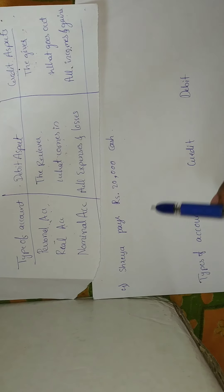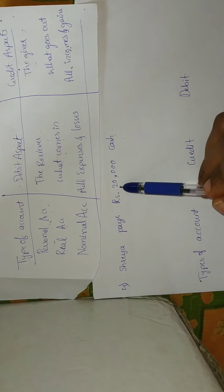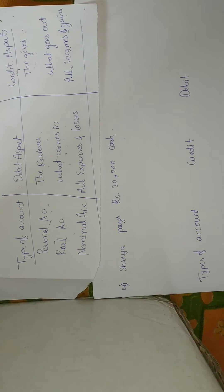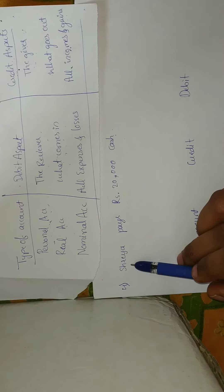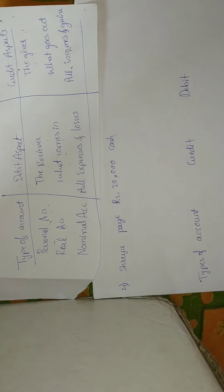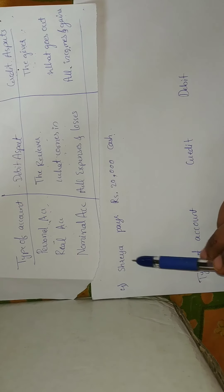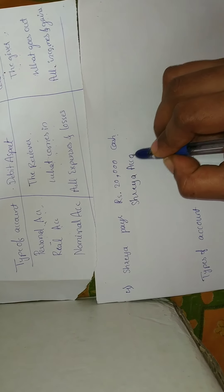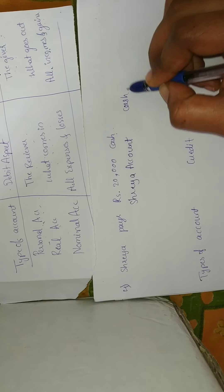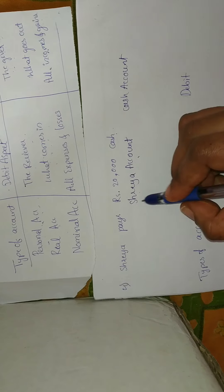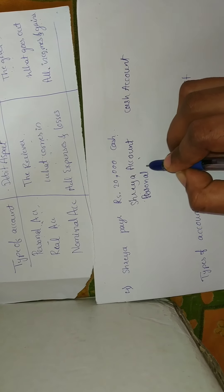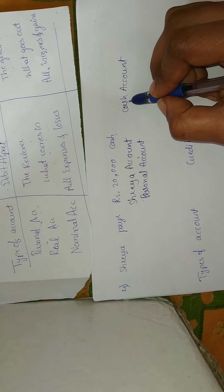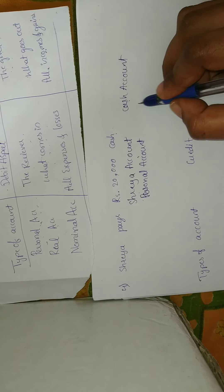The third problem: Shreya pays rupees 20,000 cash. Shreya is paying 20,000 to the organization, but it is not specified to whom. Since this company was started by Rohan — Rohan Traders — Shreya is a second party paying to the company. So one account is Shreya account and the next account is cash account. Shreya is a person's name, so this comes under personal account. Cash and assets like buildings, land, and goods come under real account.